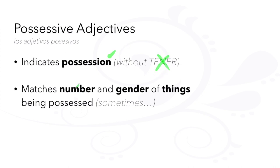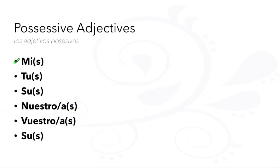Some possessive adjectives match the number and gender of the things being possessed: mi or mis, tú or tus, su or sus, nuestro or nuestra, plus the plural.